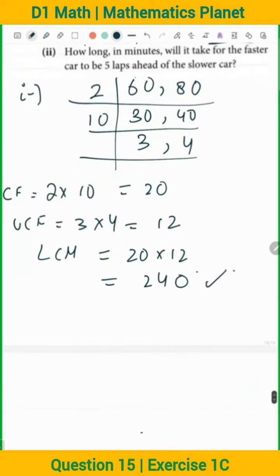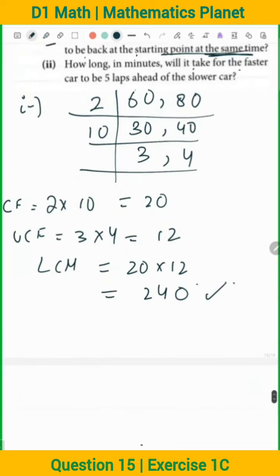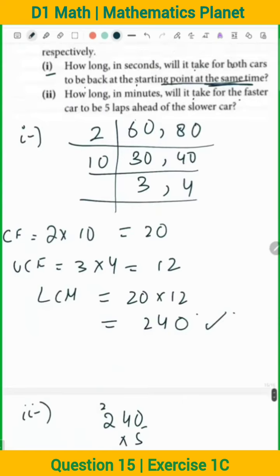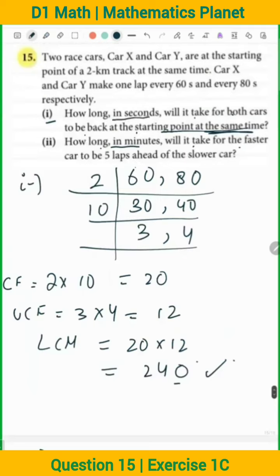Now, how long in minutes will it take for the faster car to be 5 laps ahead of the slower car? So what happens at this point? We have 240, multiply by 5. 5 times 0 is 0, 5 times 4 is 20, 5 times 10 is 11. So we get 1200. But here we have 240, how long in seconds? So this is our answer to 240 seconds.